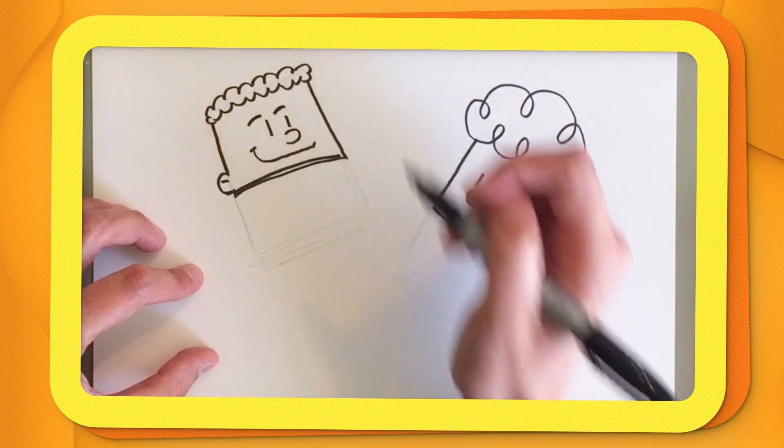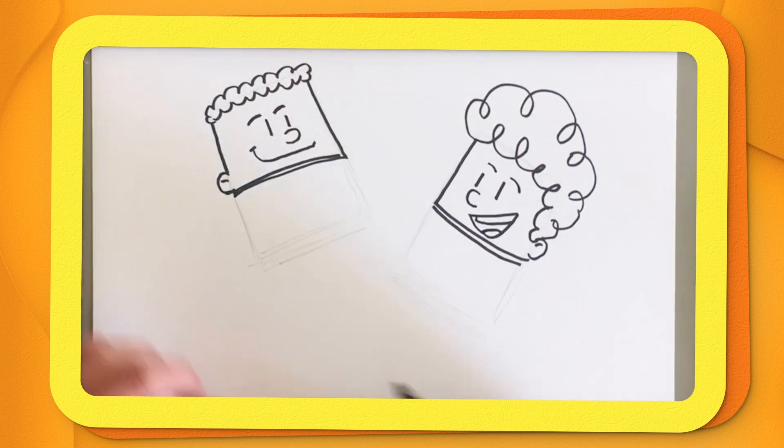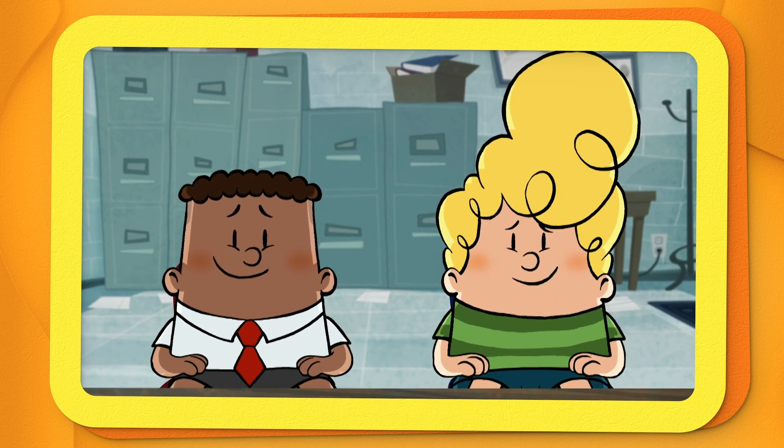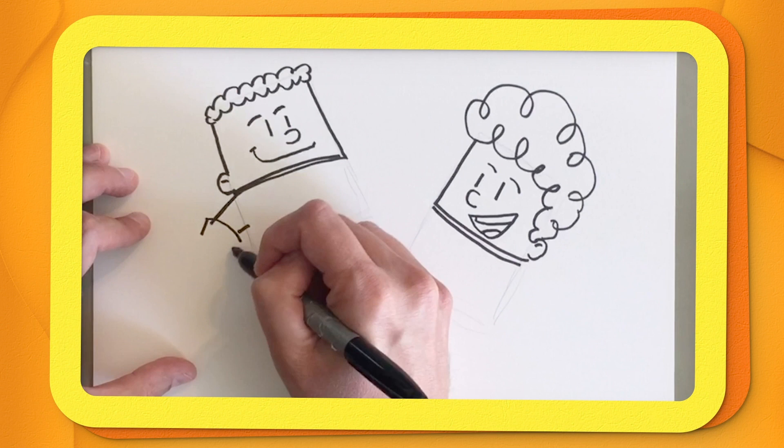Let's give him some eyebrows. We want to kind of have them looking at each other. Now this gets a little more complicated where we're going to give them arms.